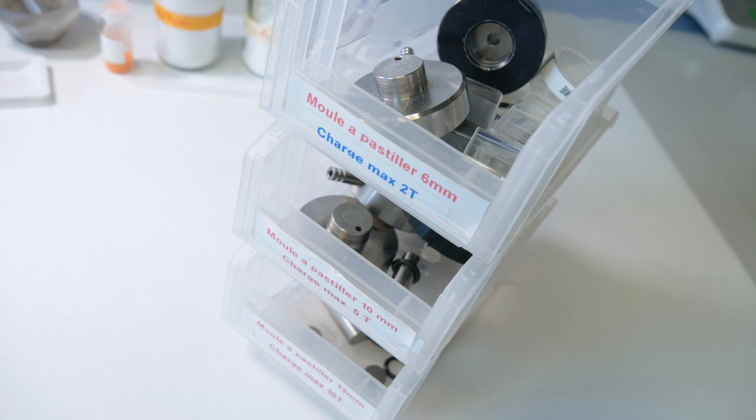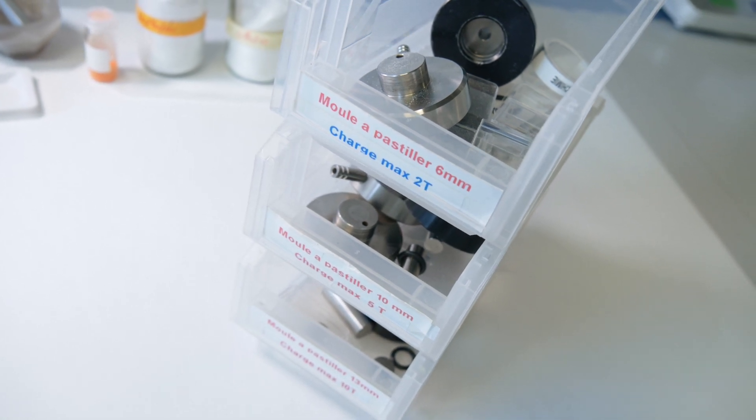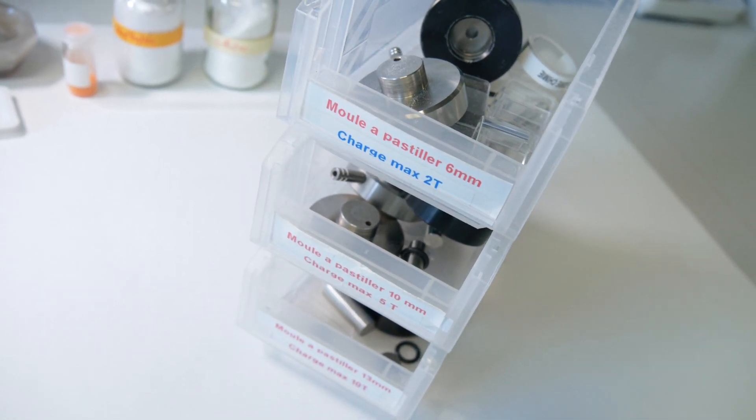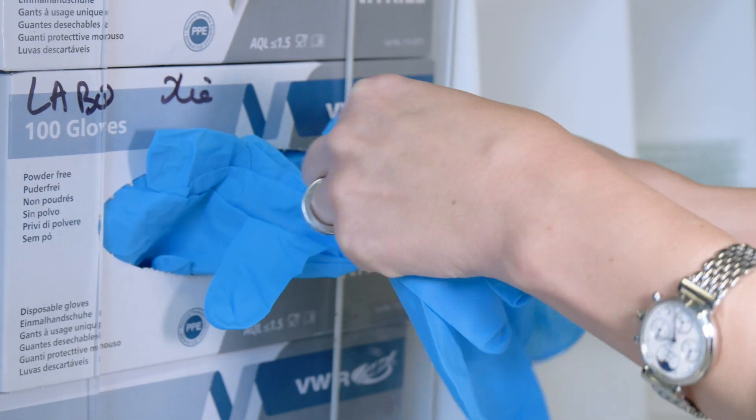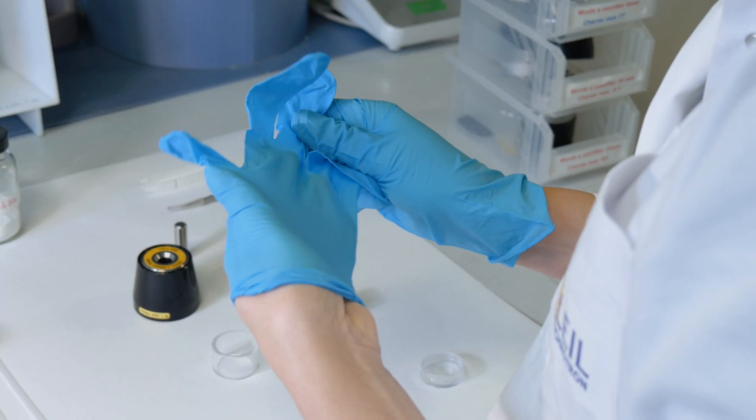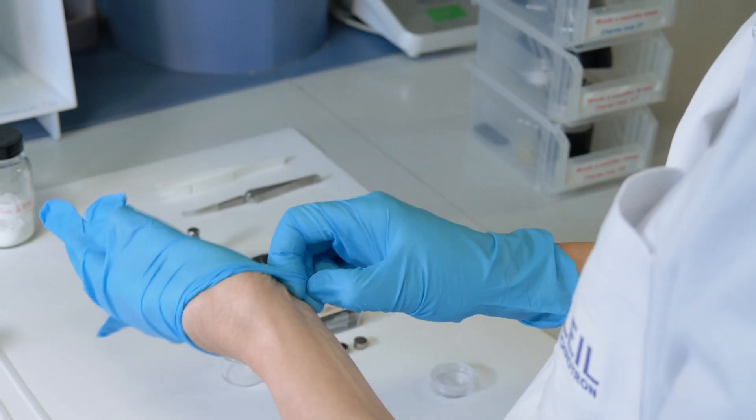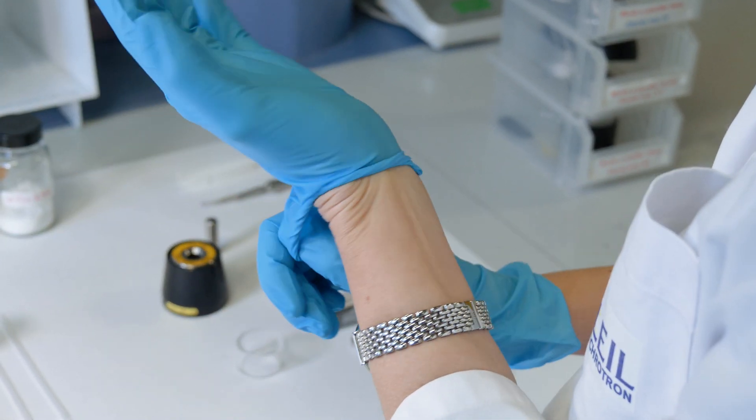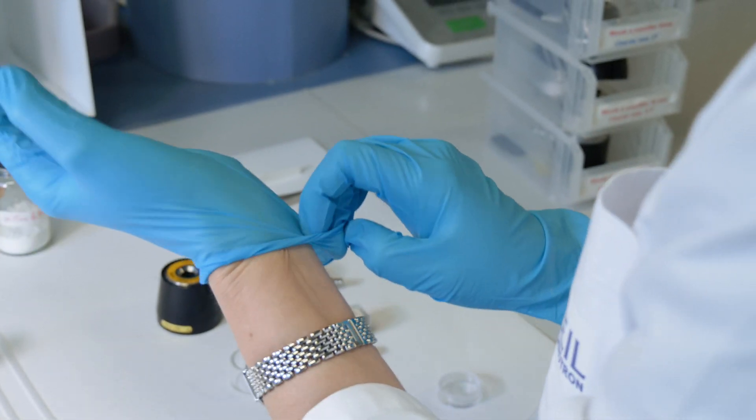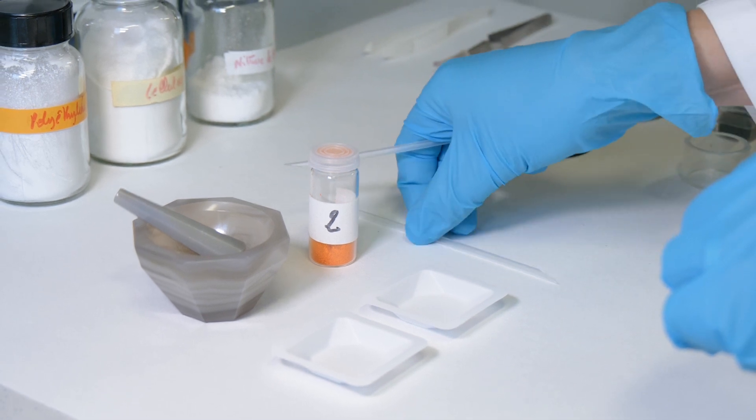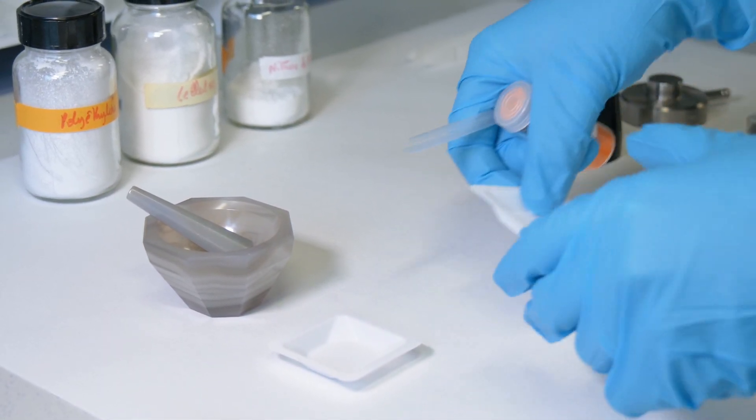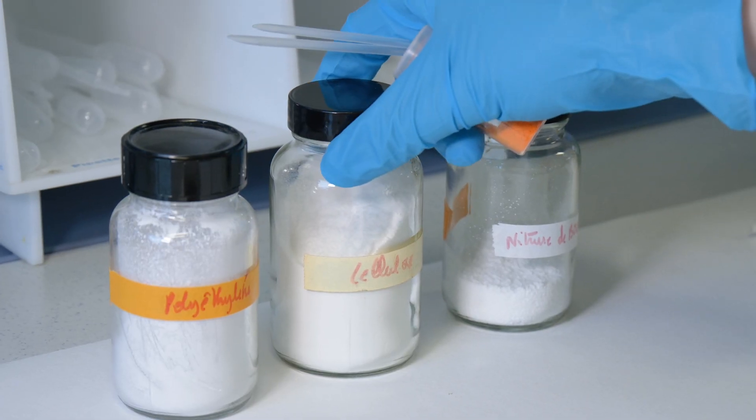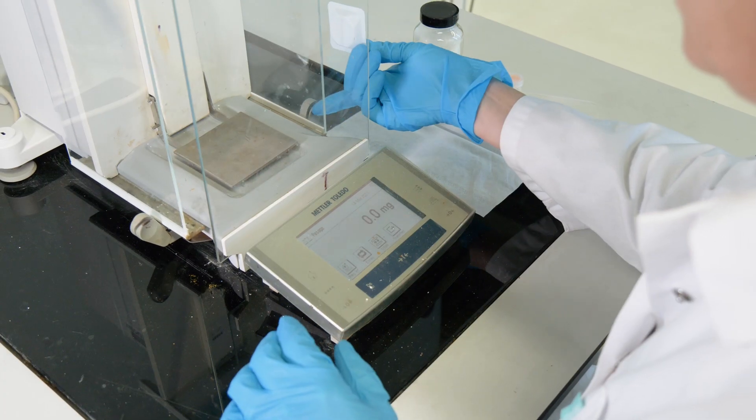Each pellet size has to be subject to a different maximum load. Before starting pellet production, you must wear personal protective equipment: lab coats, gloves, glasses and masks for handling toxic powder samples. The first step is to carefully weigh the binder and sample powder using the correct sample to binder ratio for analysis on the beamline.